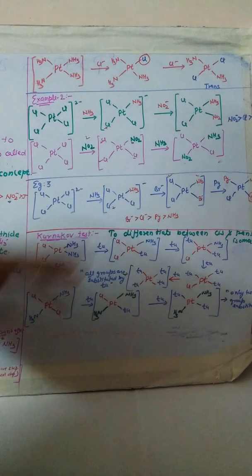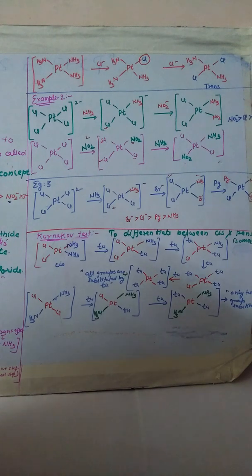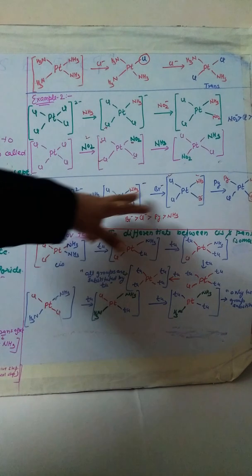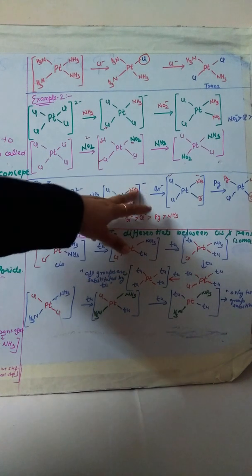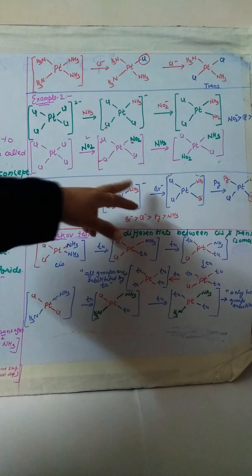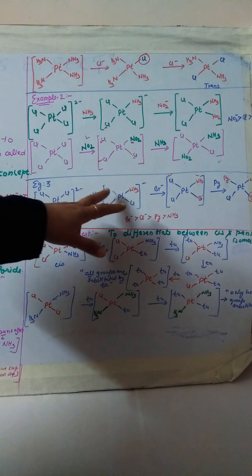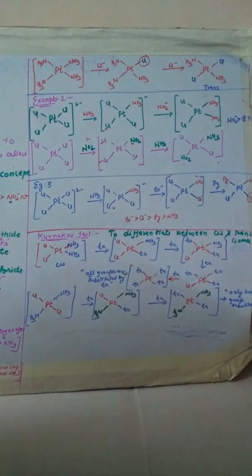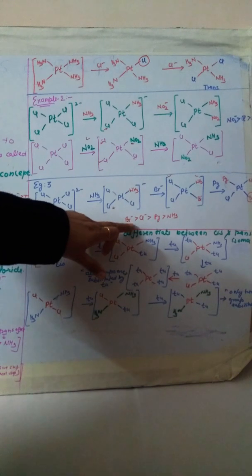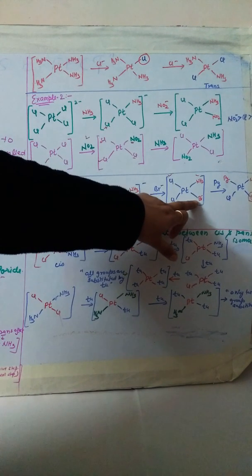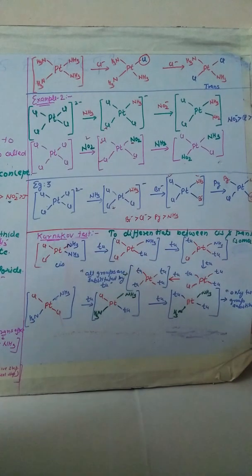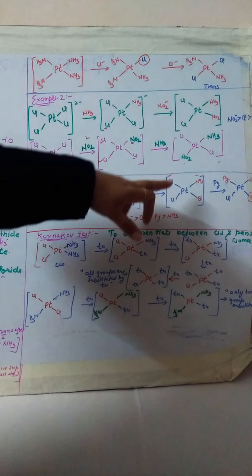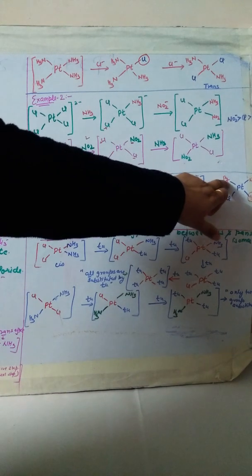In a third example, we first add ammonia, then add bromide. The ligand from the previous step (ammonia) will never be substituted, so substitution occurs at another position. Then we add pyridine. Bromide has more trans effect than chloride, then pyridine, then ammonia. So substitution takes place trans to bromide, and pyridine comes in at that position.